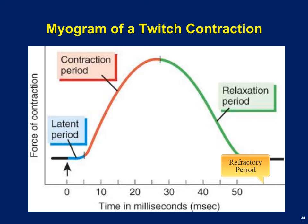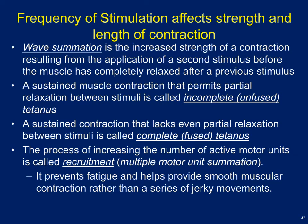The takeaway from the muscle twitch is that it involves three processes: the latent period, a contraction period, and a relaxation period, all happening in about 50 milliseconds. You really can't get a whole lot done in 50 milliseconds, so the way to get sustained muscle contraction is through something called wave summation.